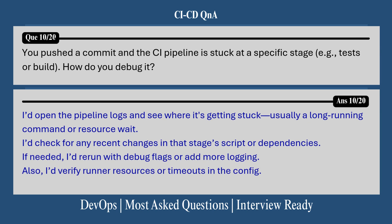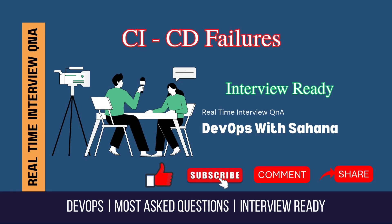Question 10: You pushed a commit and the CI pipeline is stuck at a specific stage — test or build — how would you debug it? I would open the pipeline logs and see where it's getting stuck, usually a long-running command or resource wait. I would check for any recent changes in that particular stage, script, or dependencies. If needed, I would rerun with a debug flag or add more logging. I would also verify runner resources and timeouts in the config.